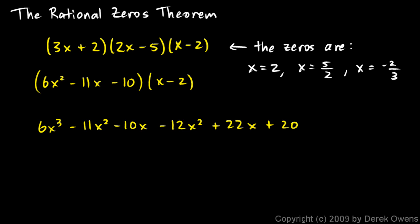And we can combine some terms here. We've got 6x³, and then -11x² and -12x² gives me -23x². And then I have -10x and +22x. That gives me +12x, and then I have the +20 on the end.